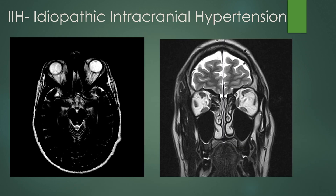IIH is included in the optic nerve complex abnormality differential because you get distension of the optic nerve sheaths and tortuosity of the optic nerves. Due to pressure within the CSF in the optic nerve sheath, you can get a little bit of reversal of the optic disc, which can lead to papilledema on exam. On coronal imaging, you can see these optic nerve sheaths are very tortuous and distended compared to the optic nerve in the center of the sheath.